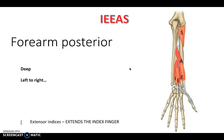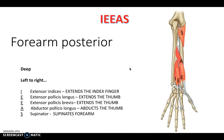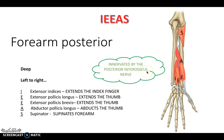Going slightly deeper in the posterior forearm we have the mnemonic IEEAS. Here we have extensor indicis, extending the index finger. Extensor pollicis longus and brevis, both extending the thumb with short and long muscle bellies. Then abductor pollicis longus, which abducts the thumb. And the supinator muscle, which supinates the forearm. This is the only compartment that differs slightly - it's innervated by the posterior interosseous nerve rather than the radial nerve as the superficial layer is.